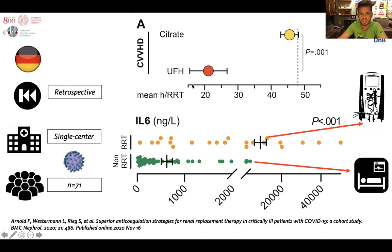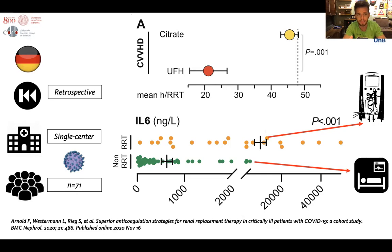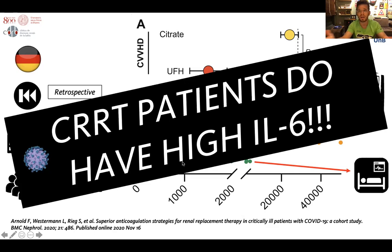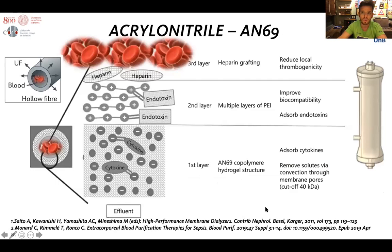This paper from Germany studied the difference in filter lifespan with different modalities of anticoagulation in CRRT. I chose this paper because it also represents concentrations of IL-6 in patients requiring renal replacement therapy. Among 71 patients, we see high levels of cytokines. I picked this paper because at the beginning of the pandemic there was discussion about whether COVID-19 patients have cytokine release syndrome. At least all patients on CRRT do have high levels of IL-6, and probably all other cytokines involved in the inflammatory response.